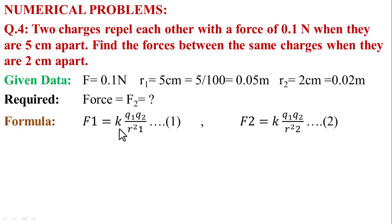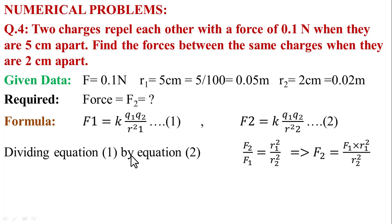Using Coulomb's law: F = k q1 q2 / r². Two forces are given, so F1 = k q1 q2 / r1² and F2 = k q1 q2 / r2². Dividing equation 1 by equation 2: F2 / F1 = r1² / r2². Therefore, F2 = F1 × (r1² / r2²).